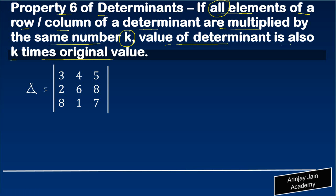So what this means is that if you multiply any of the rows or any of the columns by any constant k, whatever is the value of delta—so let's say if the value of delta is x originally—if you multiply one of the rows by k, the value of the delta 1 or the new determinant will be k times x.